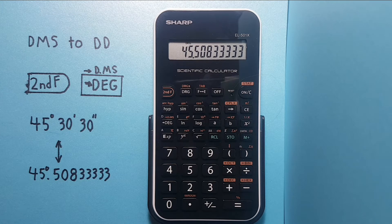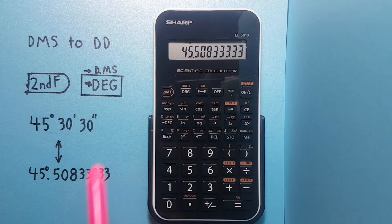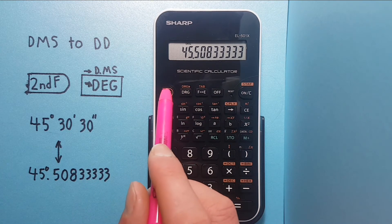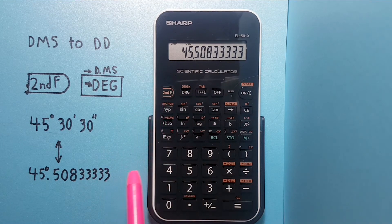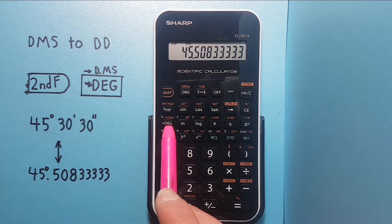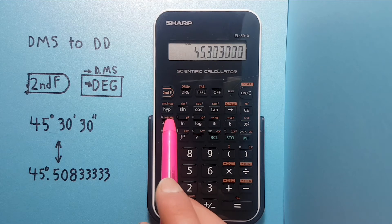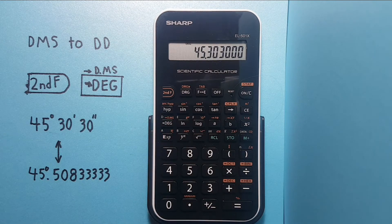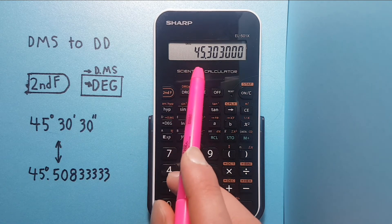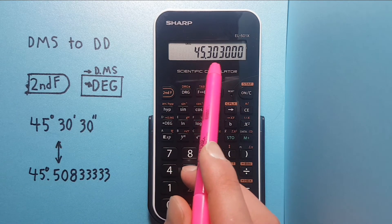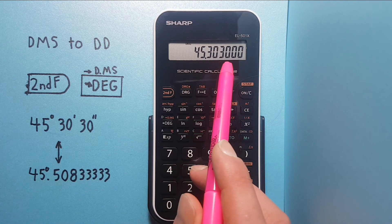But let's say we have decimal degrees and want to convert this to DMS. In this case we would press second function DEG key, which changes our number back into DMS — 45 degrees, 30 minutes, and 30 seconds.